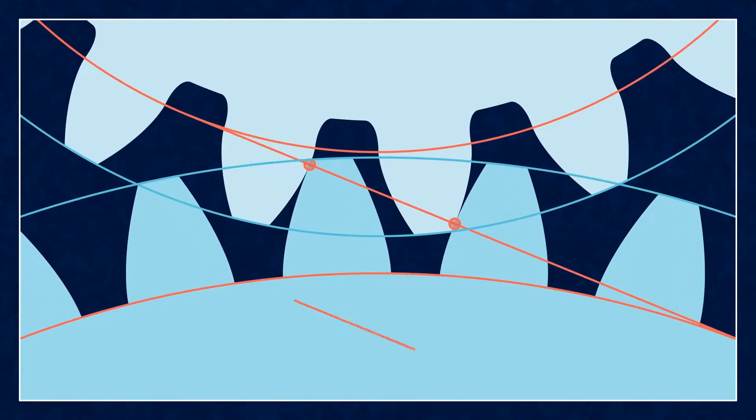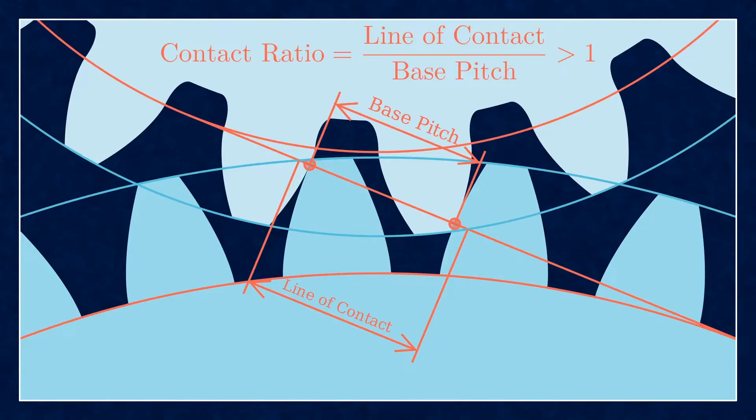It's time to introduce some new terms here. So, the line of action is the line between base circles, this is the generator line of the involute curves. The line of contact is the part of the line of action, but limited to the region where actual contact can happen.